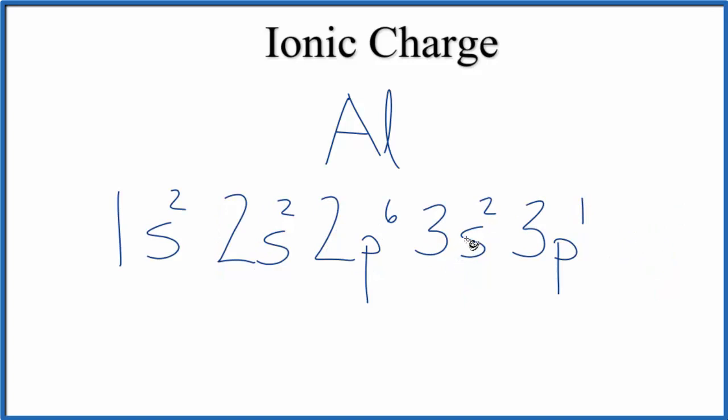So when aluminum bonds to another element to form an ionic bond, it's going to lose these 3 electrons right here. These are the electrons in its highest energy level, in the third energy level. So it'll lose 2 plus 1, 3. So these will go to the other element, they're gone.